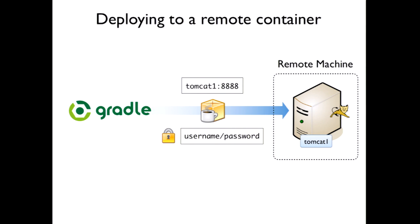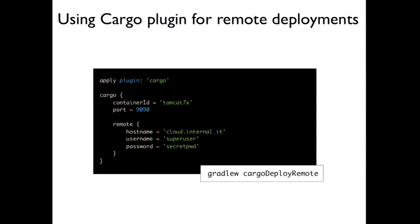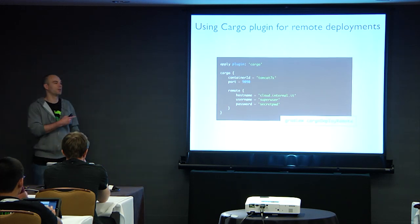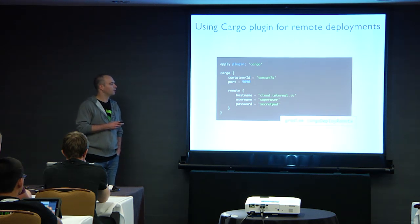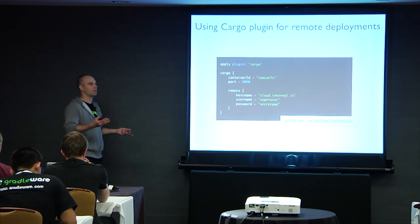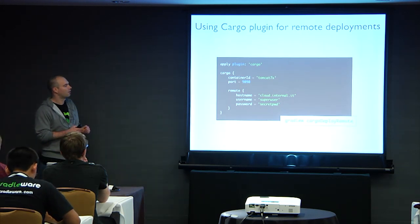For remote deployment, there's a 'remote' configuration block in the Cargo plugin. You provide a hostname, port, username, and password. Of course, credentials should be externalized, not checked into version control. You can have local and remote configuration blocks side by side, and call 'cargoDeployRemote' for the remote target.